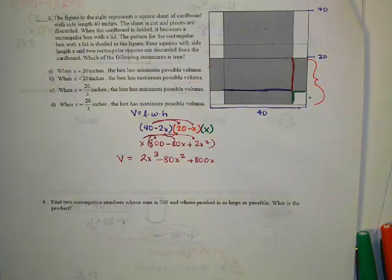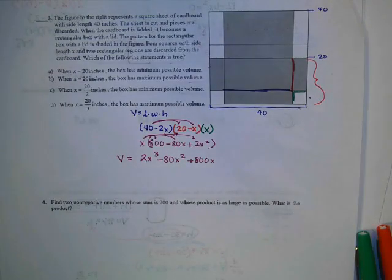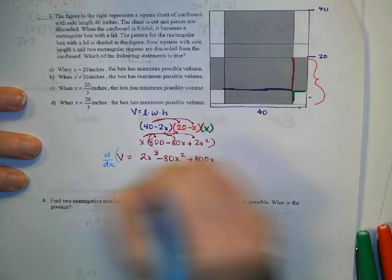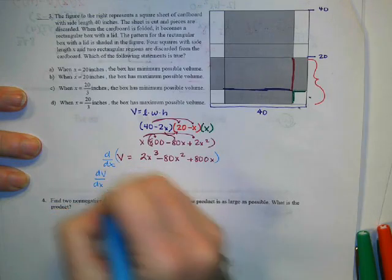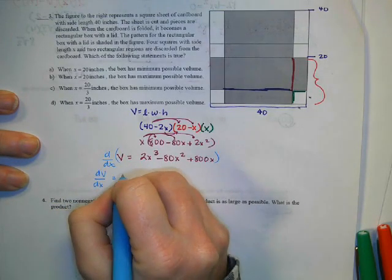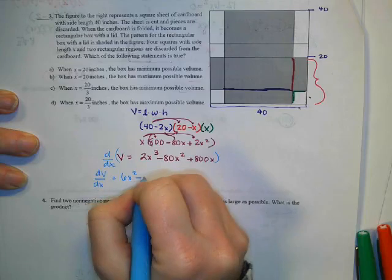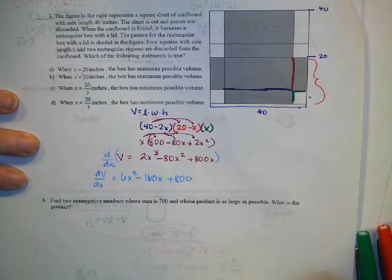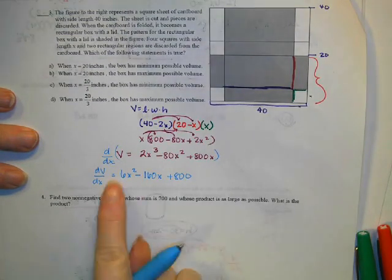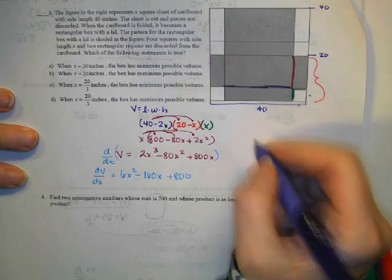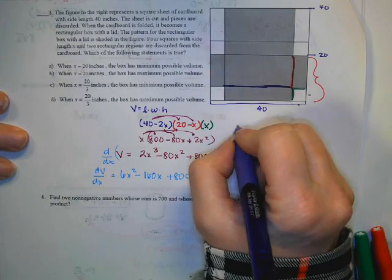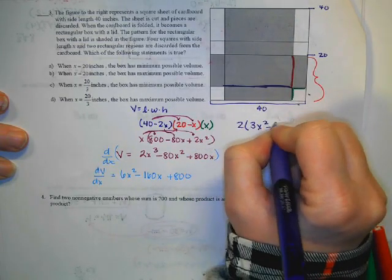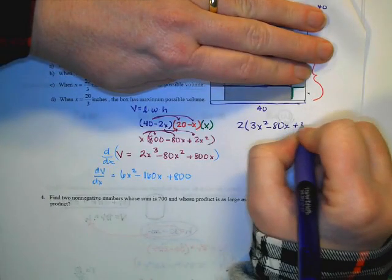Now in order to maximize, I have to take the derivative of that. So taking the derivative of this, I get the derivative of the volume in terms of x is 6x squared minus 160x plus 800. I need to find some critical values. So I'm going to factor this before I do anything. I think you can divide it all by 2. So that would give me 3x squared minus 80x plus 400.